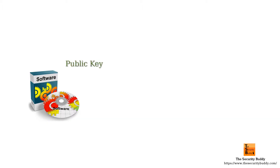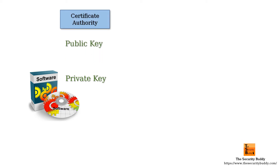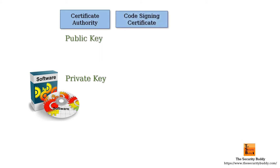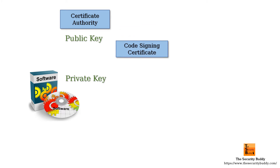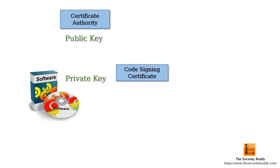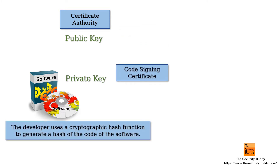A software developer first generates a public key and a private key using public key cryptography. The public key is sent to a certificate authority. The certificate authority issues a code signing certificate and digitally signs the code signing certificate.